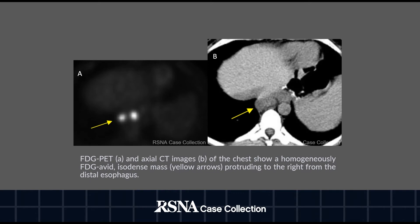Images A and B correspond to an FDG PET and axial CT image of the chest, showing a homogeneously FDG-avid area corresponding to the isodense mass in the distal esophagus, denoting its hypermetabolic nature.